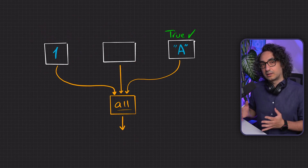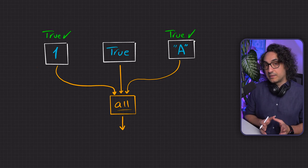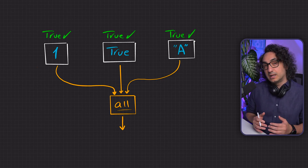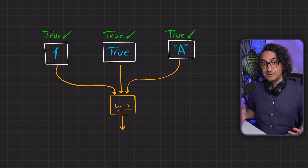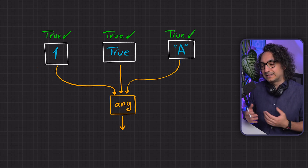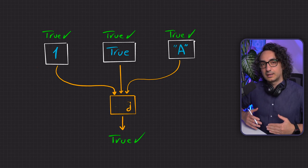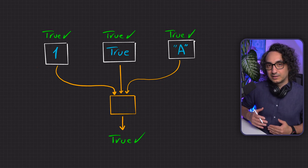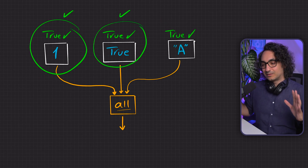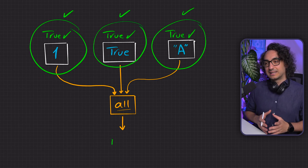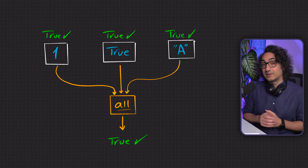Let's take another example where we have three values: 1, true, and 'a'. Python evaluates them one by one and all of them are true. Using any() returns true because it only needs one true value. And using all() also returns true this time because everything is true and all the values pass the check.